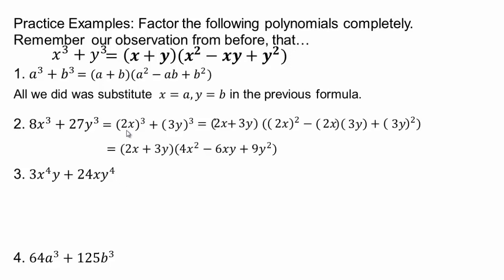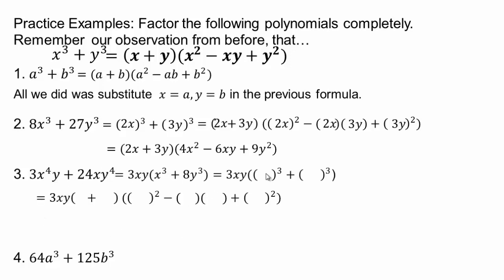You're replacing 2x and 3y into the sum of cubes formula. 2x × 4x² = 8x³ and 3y × 9y² = 27y³. The middle term is the product of those two, and if the binomial factor has a plus sign then the trinomial middle term has a minus sign, and vice versa. Factor out the greatest common factor first, then apply the formula. If x goes in the first-term positions and 2y goes in the second-term positions, finish it off.